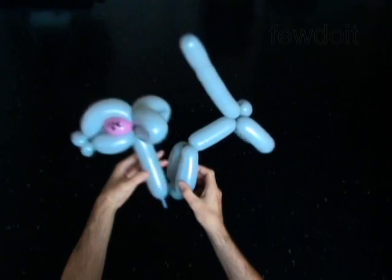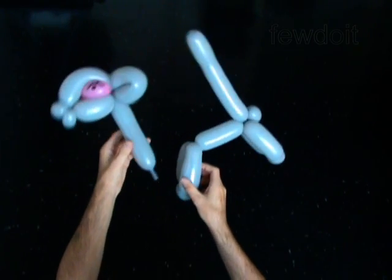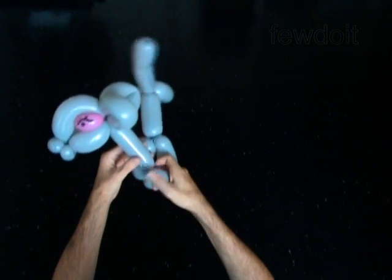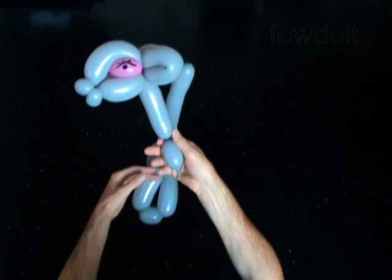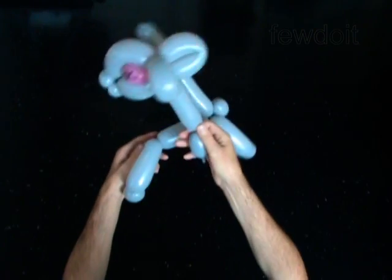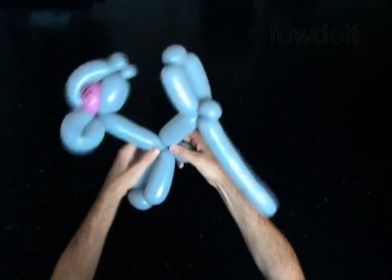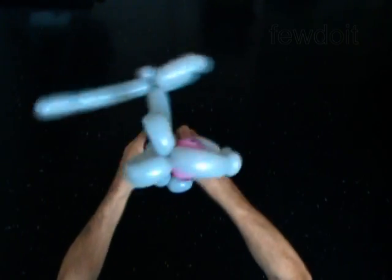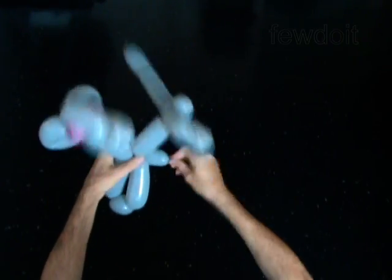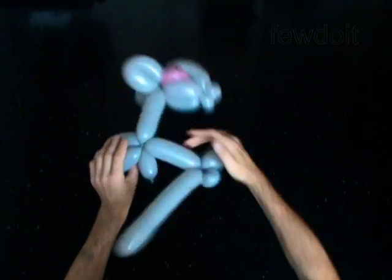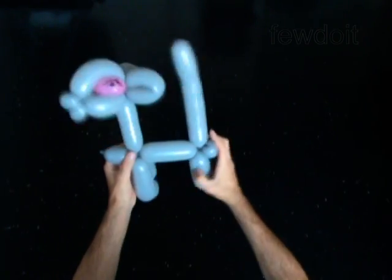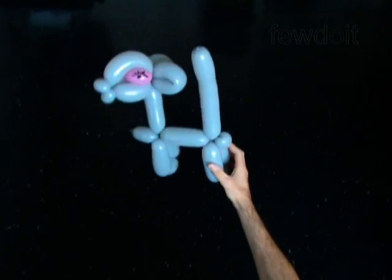All you have to do is to twist the ninth two inch bubble at the end of the neck. Lock both ends of the ninth bubble between the legs of the body. If you have made the ninth bubble at the very end of the neck, then you need to lock just the free end of the ninth bubble.